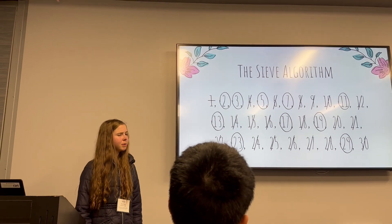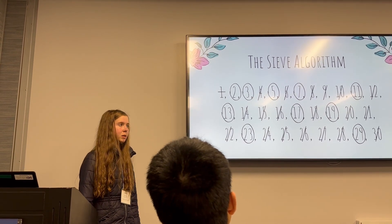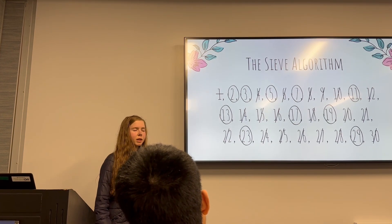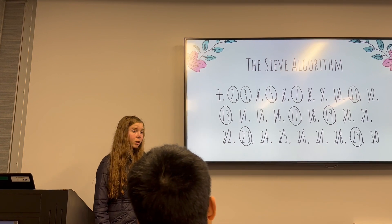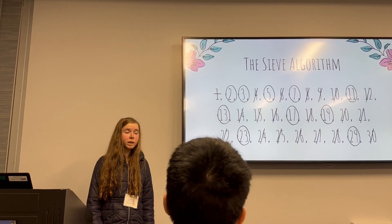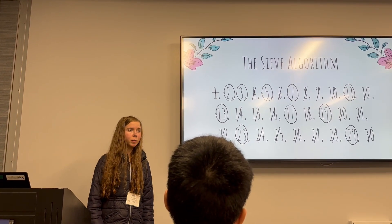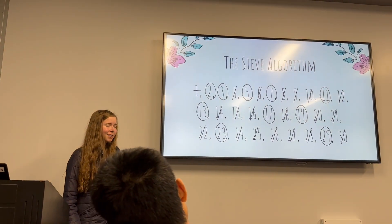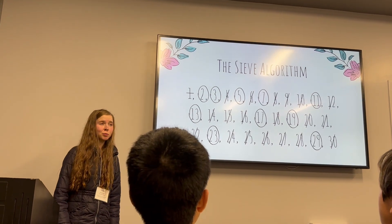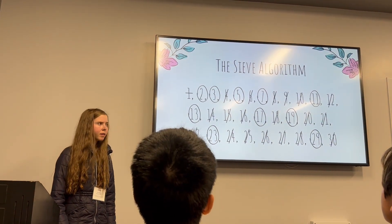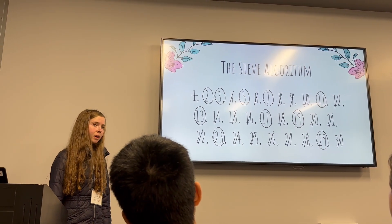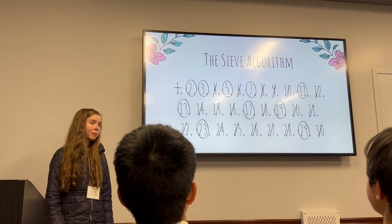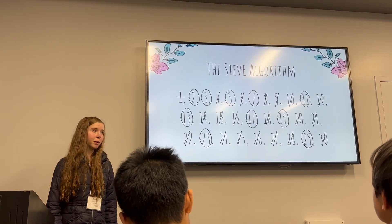As we were going through this process, each prime number removed significantly fewer numbers than the preceding prime number: 2 took out 14 numbers, while 3 only crossed out 4 new numbers, and 5 took out just 1. This is an important pattern, because the rate of removal in Eratosthenes' sieve is what is determining the density of prime numbers.